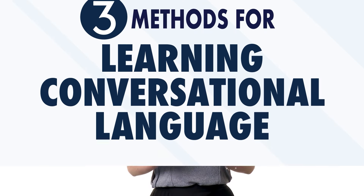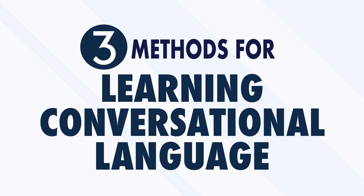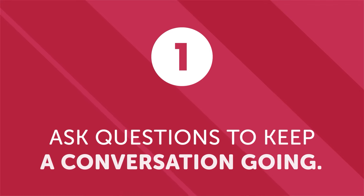But how can you possibly have real conversations with real people if you're just starting out? Here are three proven methods that even beginners can quickly use to learn conversational language. First: ask questions to keep a conversation going. For beginners and even more advanced speakers, the key is to ask questions — they can't be random, but by memorizing a few key questions and the appropriate time to use them, you can easily carry a conversation with minimal vocabulary.